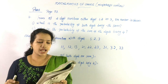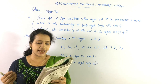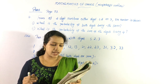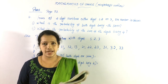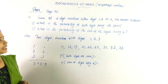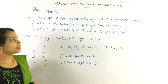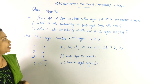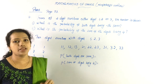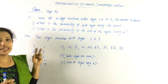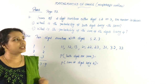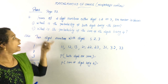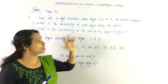Question number 4. From all two-digit numbers where each digit is 1, 2, or 3, one number is chosen. What is the probability of both digits being the same? We form two-digit numbers using digits 1, 2, and 3. Total of 9 such numbers are possible.